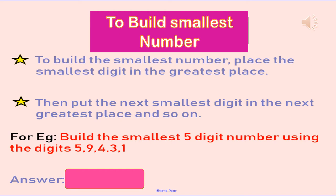It is quite easy to build the smallest possible number. We just have to place the smallest digit in the greatest place, then put the next smallest digit in the next greatest place and so on. Build the smallest five-digit number using the digits 5, 9, 4, 3, and 1. The smallest digit is 1, so we will place it at the greatest place — the 10,000 place. Then 3 at the thousands place, 4 at the hundreds place, 5 at the tens place, and 9 at the ones place. So we get the number 13,459.